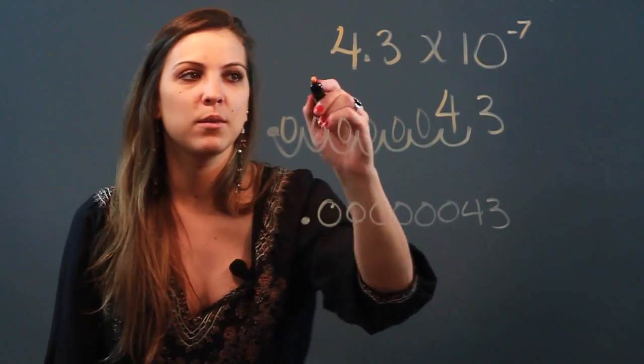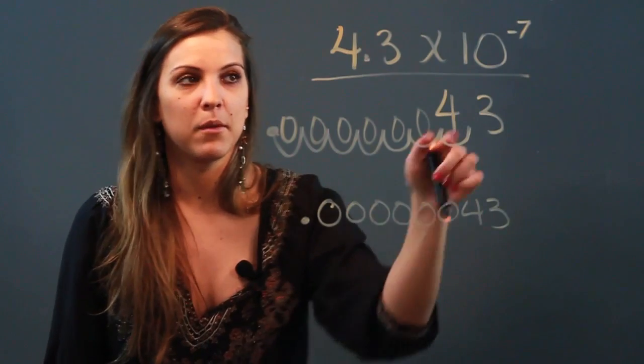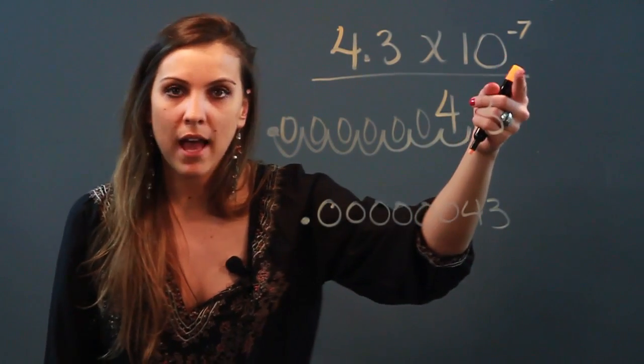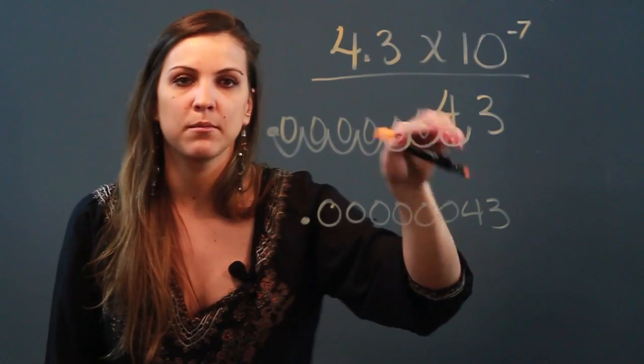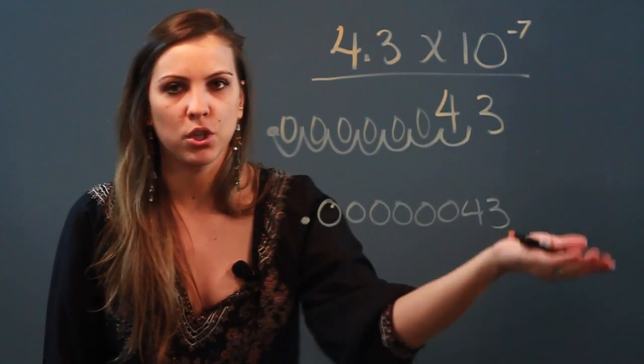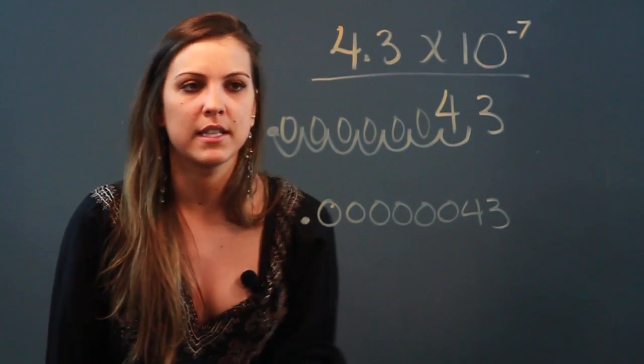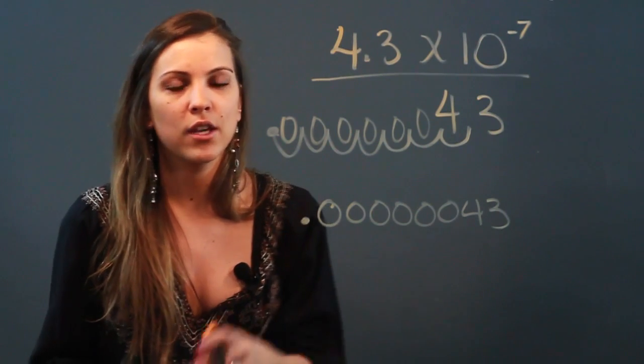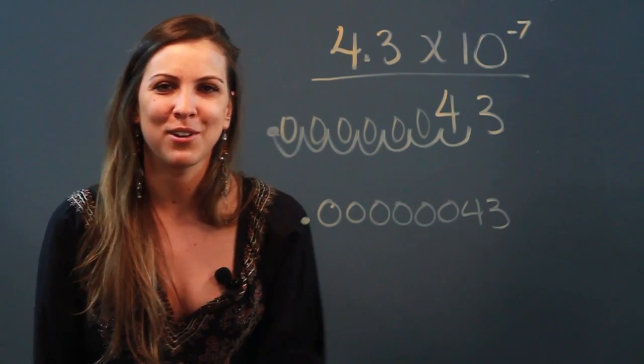So exponents are a really easy way to write this number in a much more convenient fashion. And then if the exponent was positive, all you would do is move your decimal over to the right and it would show you a really big number as opposed to the really small number that we just did. So that's how you use exponents to represent large and small numbers in scientific notation.